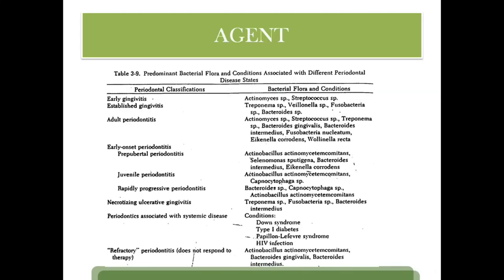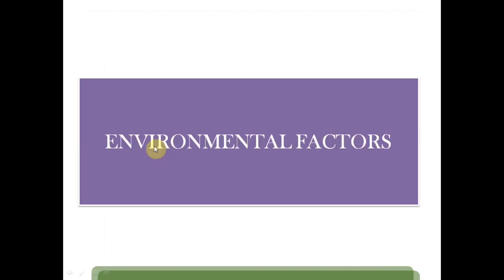Agent factors include various bacteria: Actinomyces, Streptococcus, Treponema, Fusobacterium, and Actinobacillus actinomycetemcomitans, which is associated with juvenile or aggressive periodontitis. These are the key bacterial agent factors.